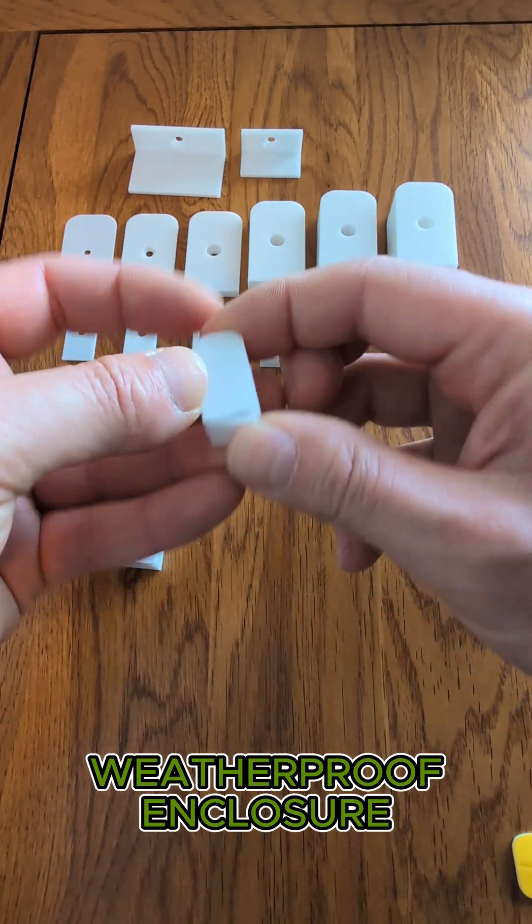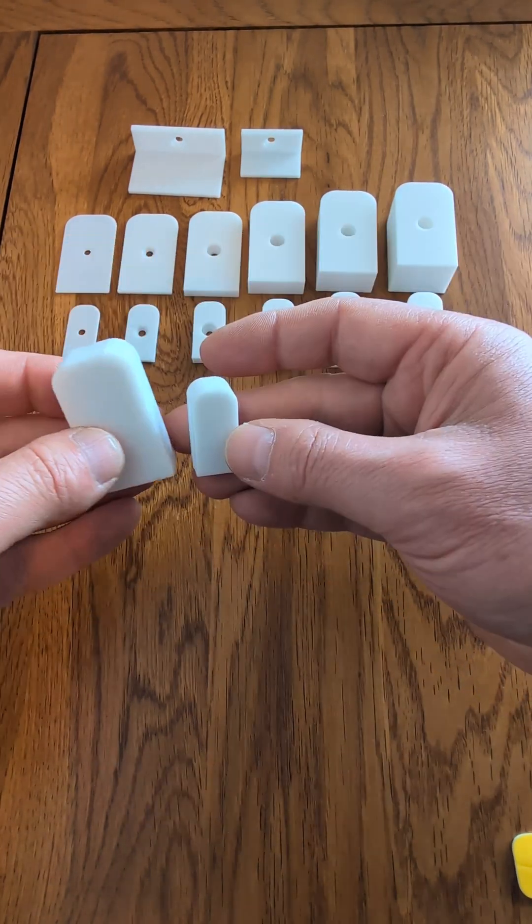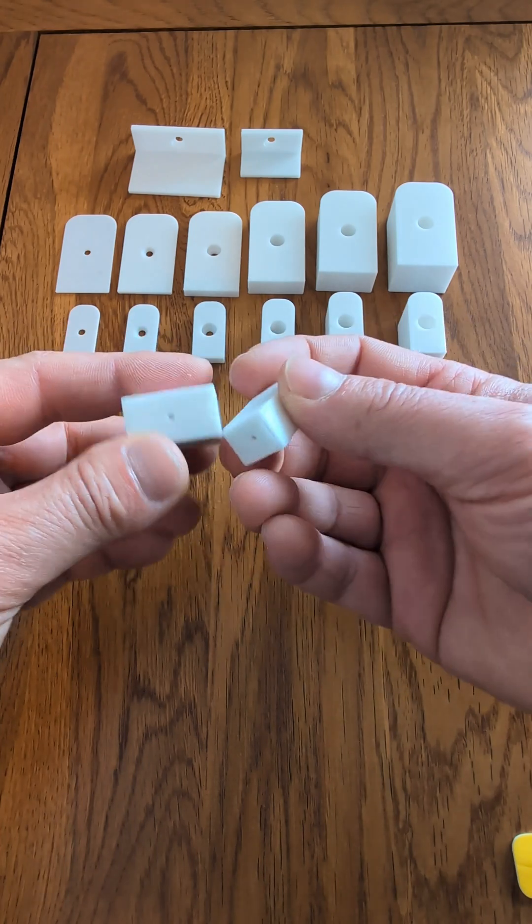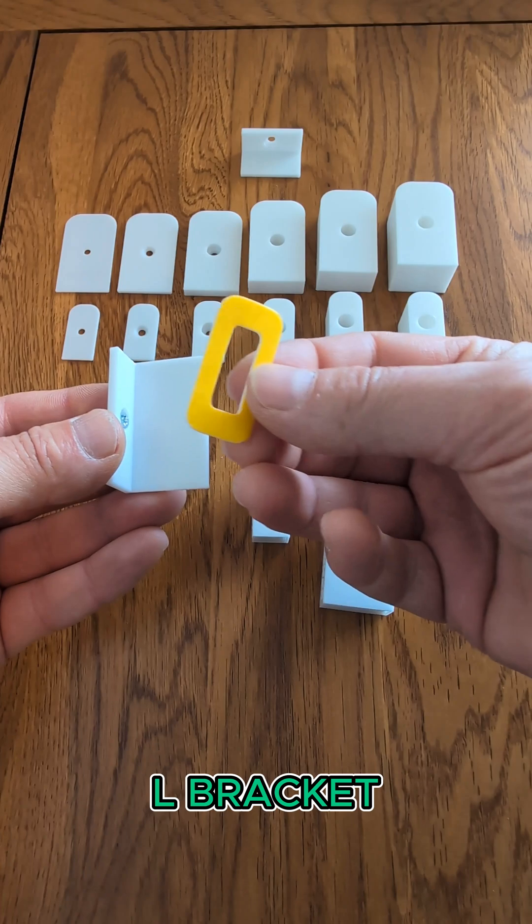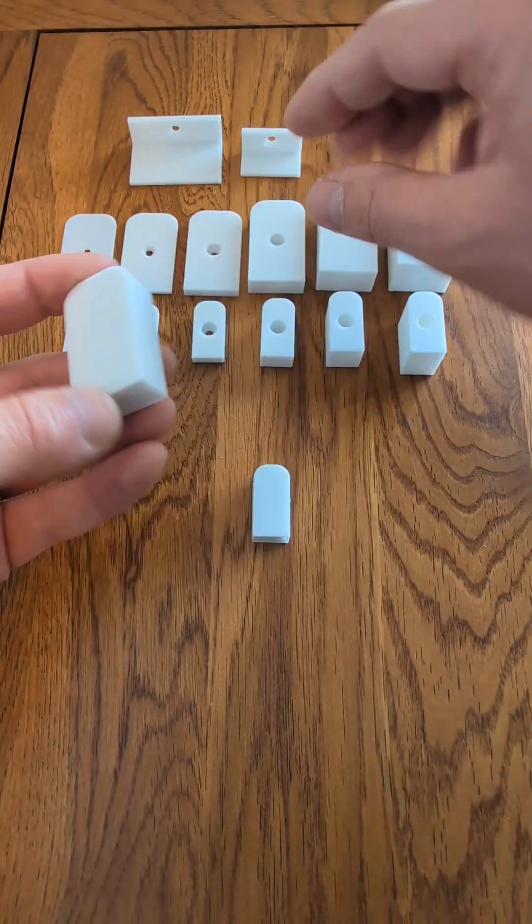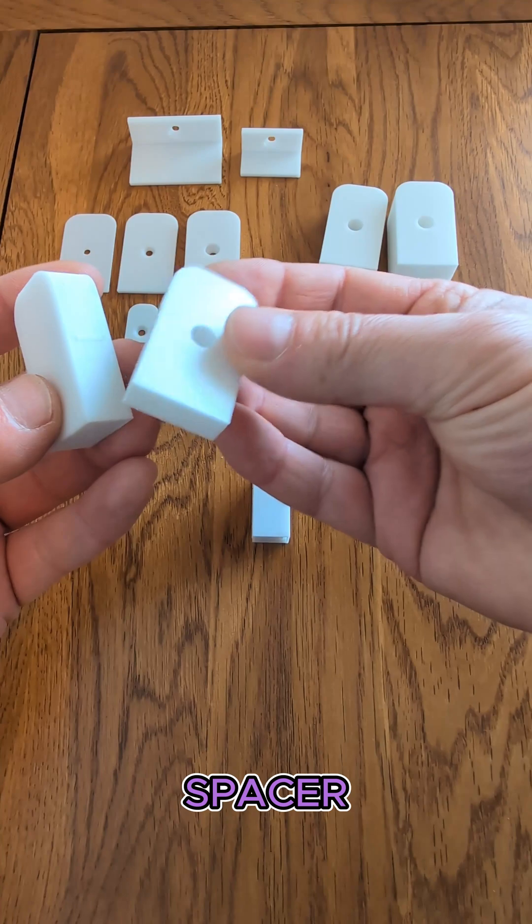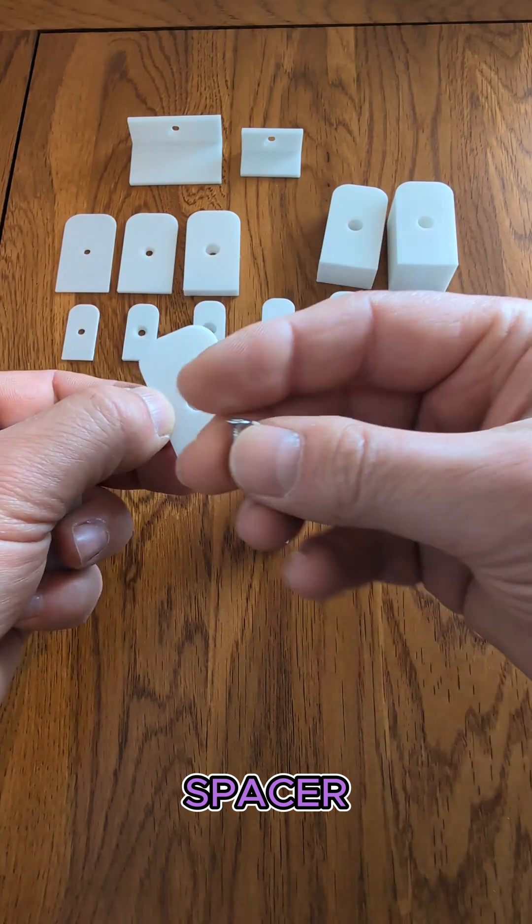A weatherproof 3D printable kit designed specifically for the Aqara sensor. This downloadable STL pack includes sleek, water-resistant enclosures for both the sensor and the magnet, plus optional spacers and L-brackets to fit almost anywhere.